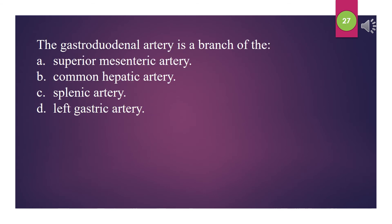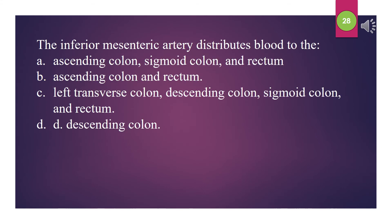The gastroduodenal artery is a branch of the: A. Superior mesenteric artery. B. Common hepatic artery. C. Splenic artery. D. Left gastric artery. The answer is B: Common hepatic artery. The inferior mesenteric artery distributes blood to the: A. Ascending colon, sigmoid colon, and rectum. B. Ascending colon and rectum. C. Left transverse colon, descending colon, sigmoid colon, and rectum. D. Descending colon. The answer is C: Left transverse colon, descending colon, sigmoid colon, and rectum.